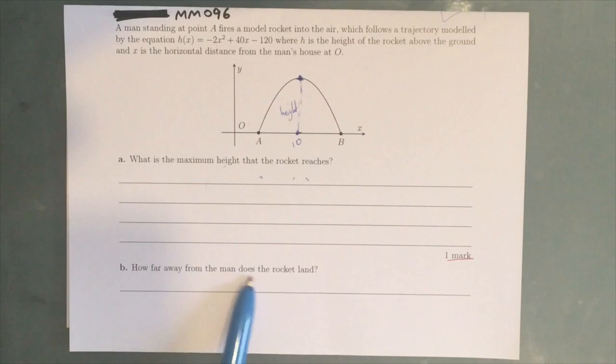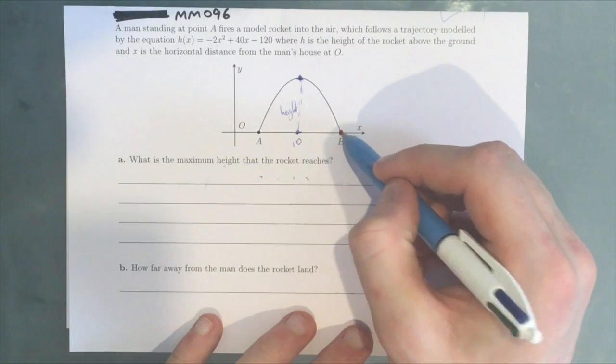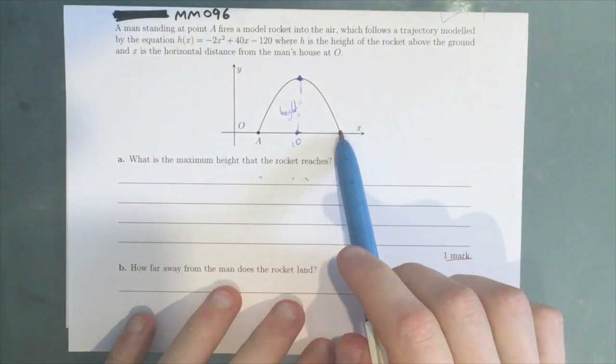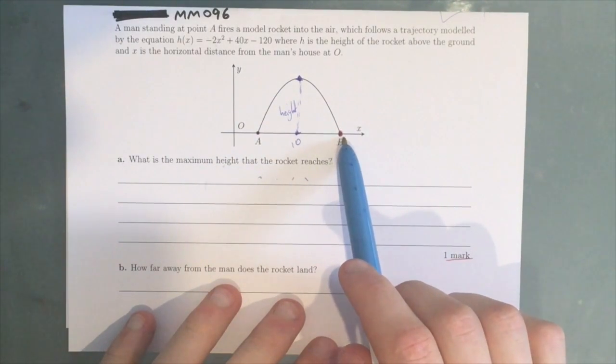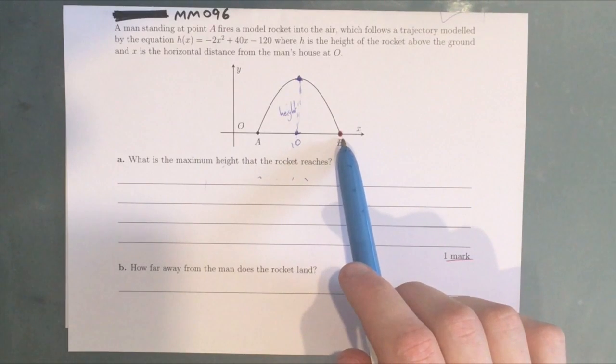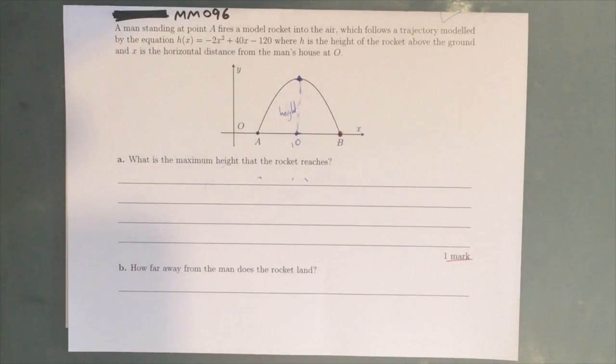Part B is asking us, how far away from the man does the rocket land? So basically, what we're trying to figure out is this point here at B. Now, where does B occur? On the x-axis. What is on the x-axis? The x-intercepts. So what do we need to do? Find out what the coordinates are of the x-intercepts.